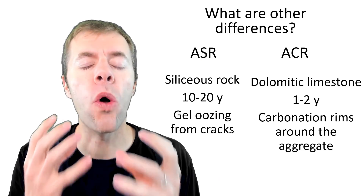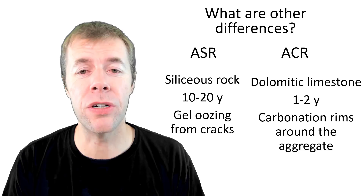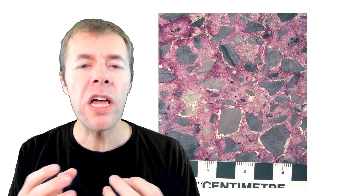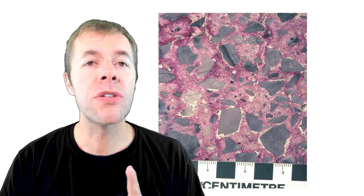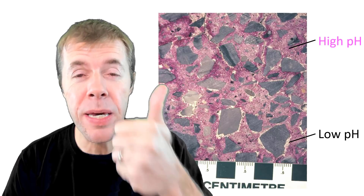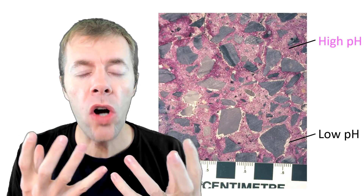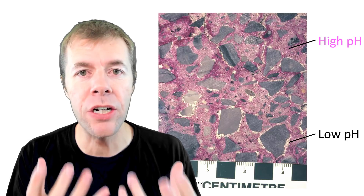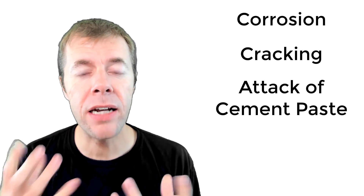With ACR, you've got to have used a dolomitic limestone in your concrete mixture. It can happen pretty rapidly — after just one to two years. Around the aggregates, you'll see something called a carbonation rim. If you take phenolphthalein, which is a pH indicator, and spray the inside of your concrete, you'll see some areas are pink — that's good, that's a high pH. In other areas where the attack is happening, you'll see low pH. The concrete is carbonated from the inside out. This is bad for concrete: it can cause corrosion of rebar, cracking, and overall attack of the cement paste.